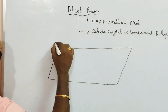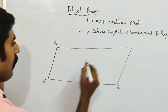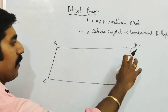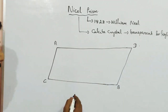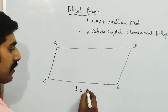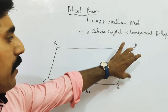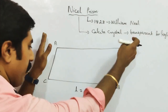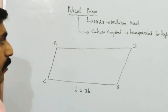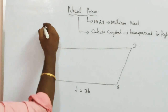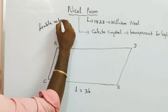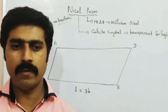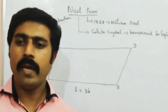See the calcite crystal. See the terminals — every picture comes in A, B, C, D. So listen: in the calcite crystal, the length of the calcite crystal is 3 times of its breadth.